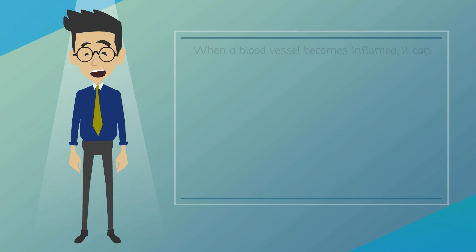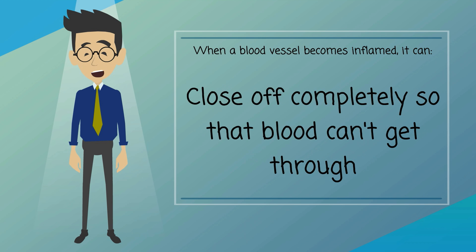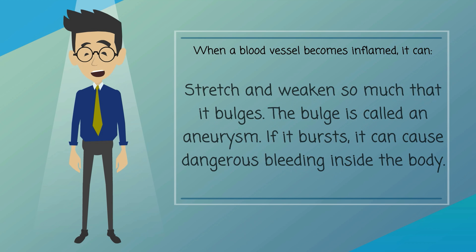When a blood vessel becomes inflamed, it can narrow, making it more difficult for blood to get through; close off completely so that blood can't get through; or stretch and weaken so much that it bulges. The bulge is called an aneurysm. If it bursts, it can cause dangerous bleeding inside the body.